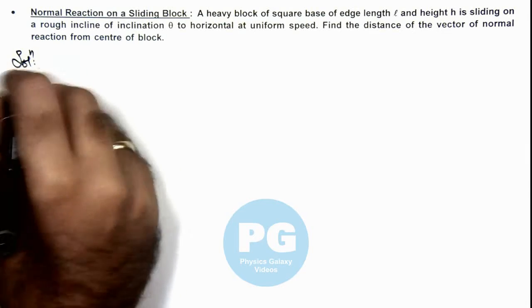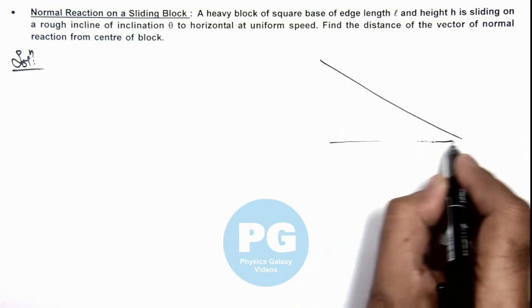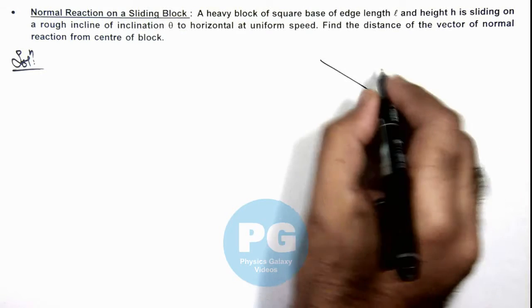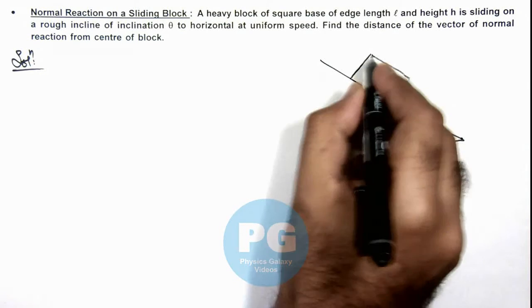Here if we draw the situation, we can see on the inclined plane having inclination theta, a block having a square base is sliding.